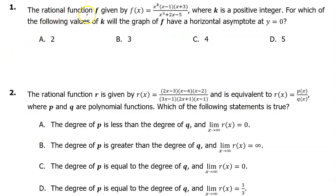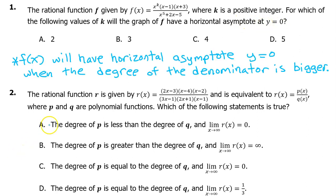Number 1. The rational function f is given by f of x equal to this expression, where k is a positive integer. For which of the following values of k will the graph of f have a horizontal asymptote at y equals 0? A rational function will have a horizontal asymptote y equals 0 when the degree of the denominator is bigger.